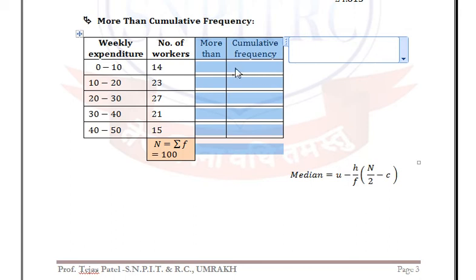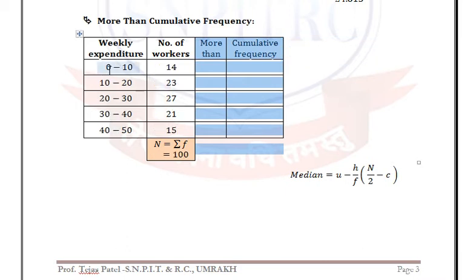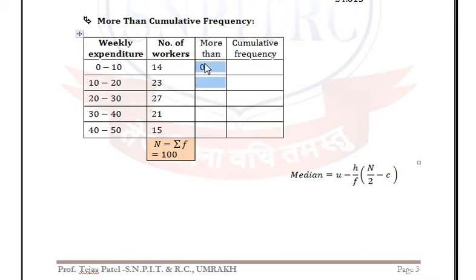For the more than form, when defining cumulative frequency you need to take the lower limit. So we use: more than 0, more than 10, more than 20, more than 30, and more than 40.